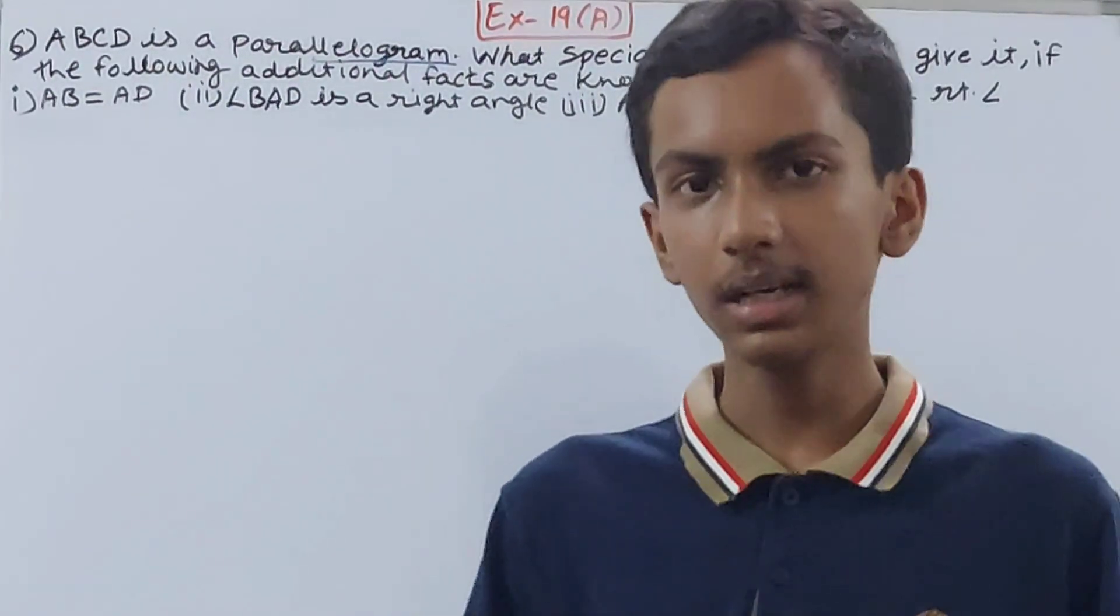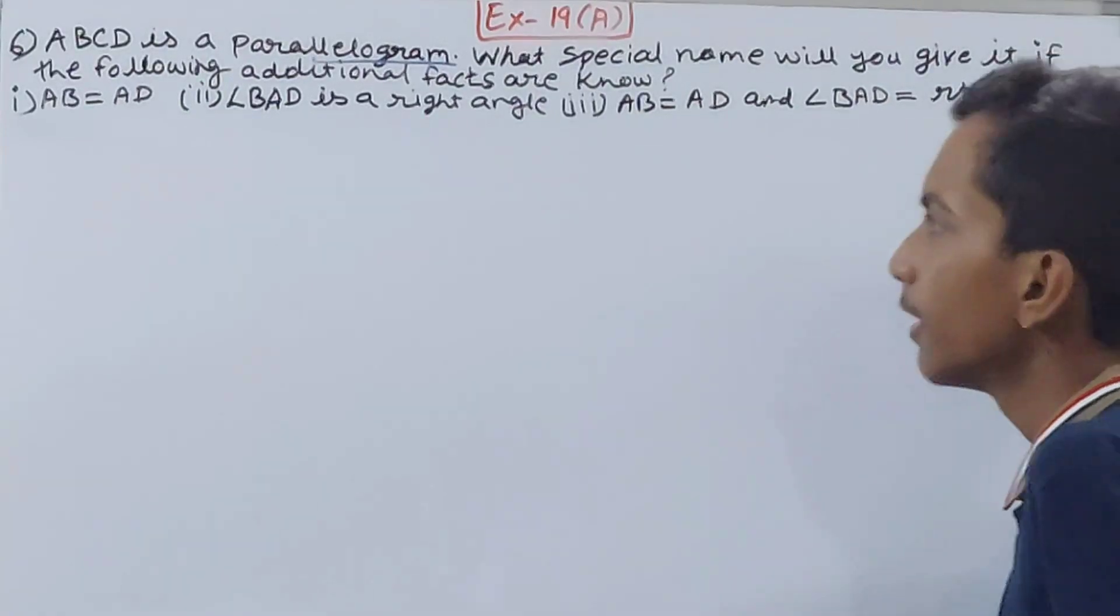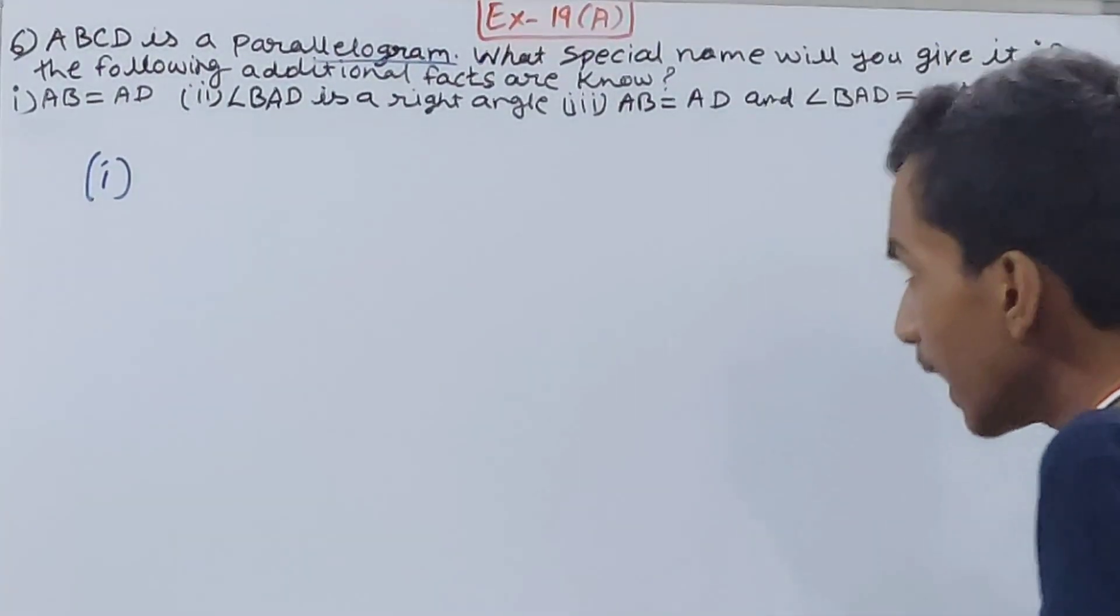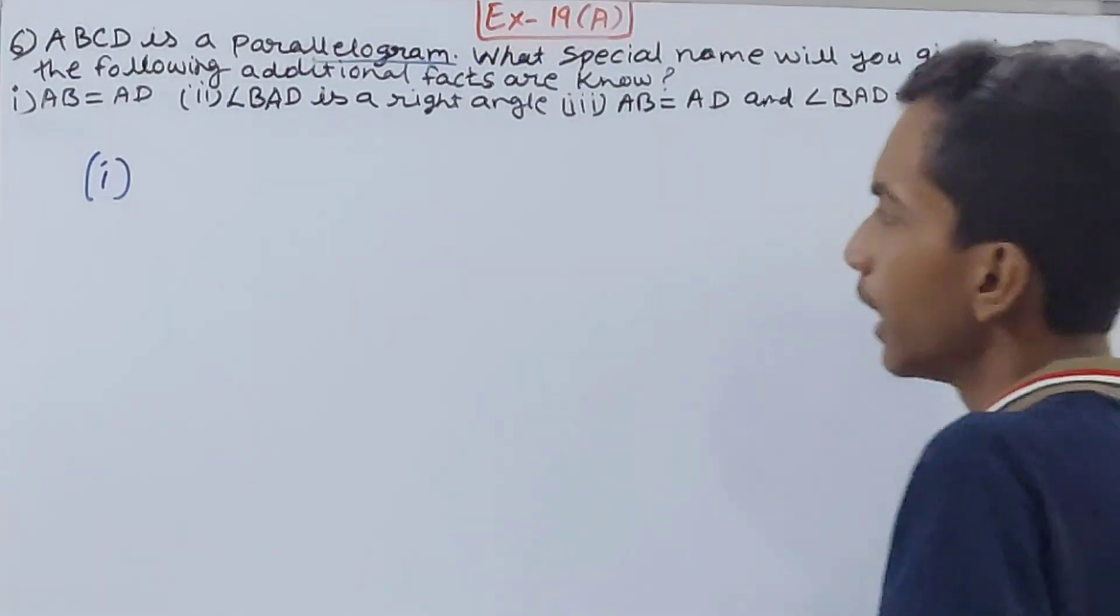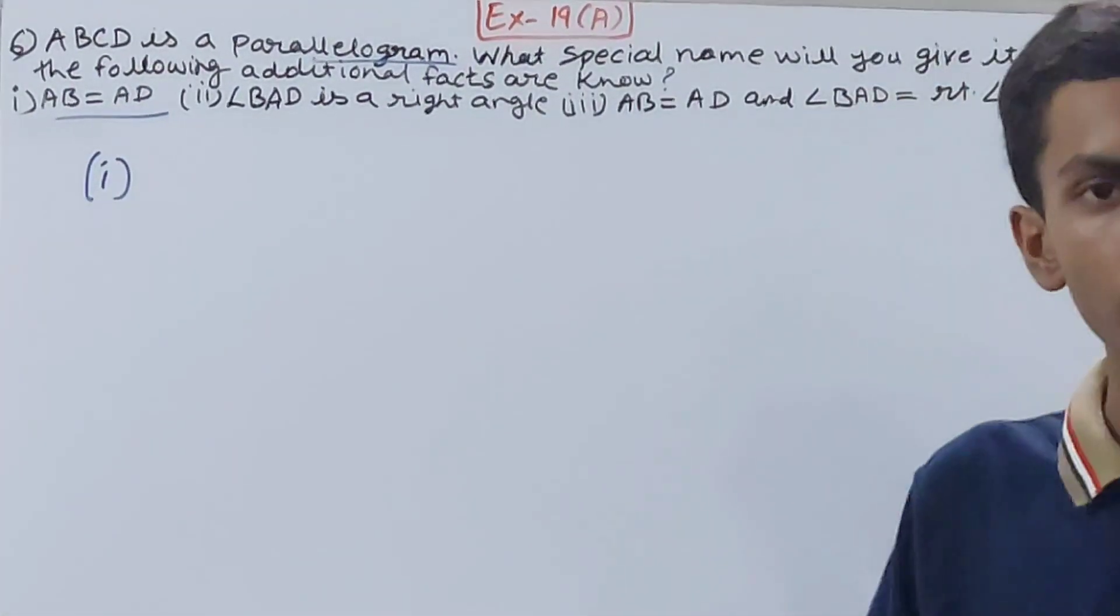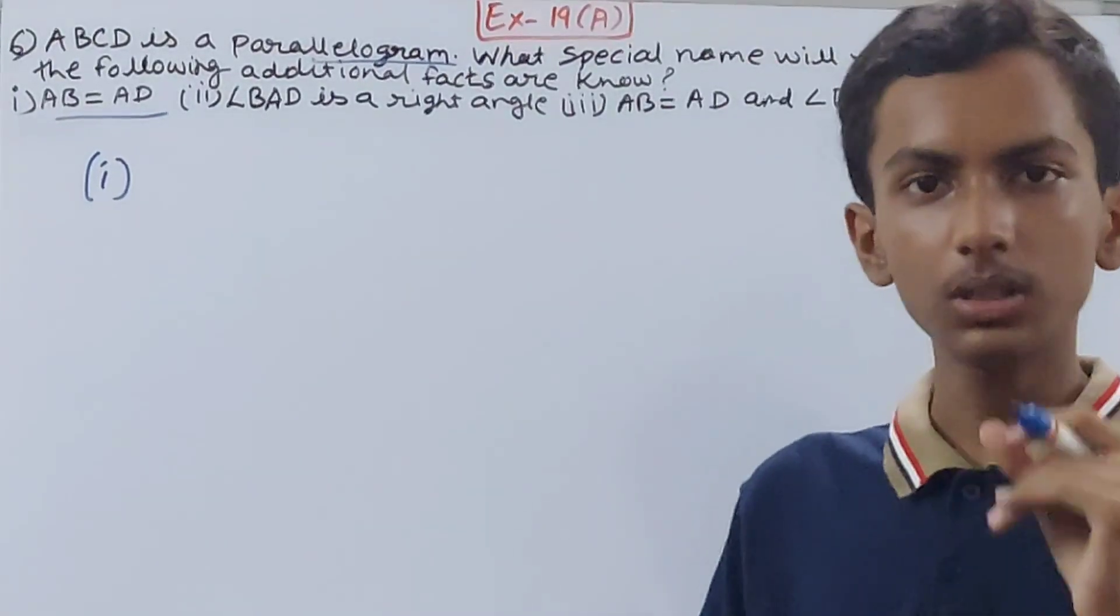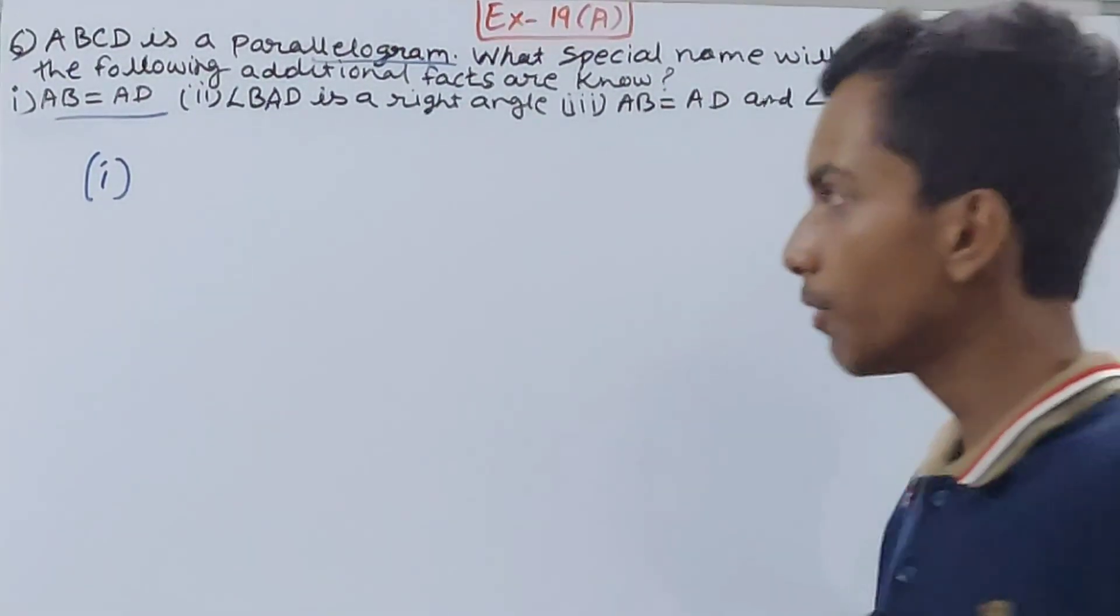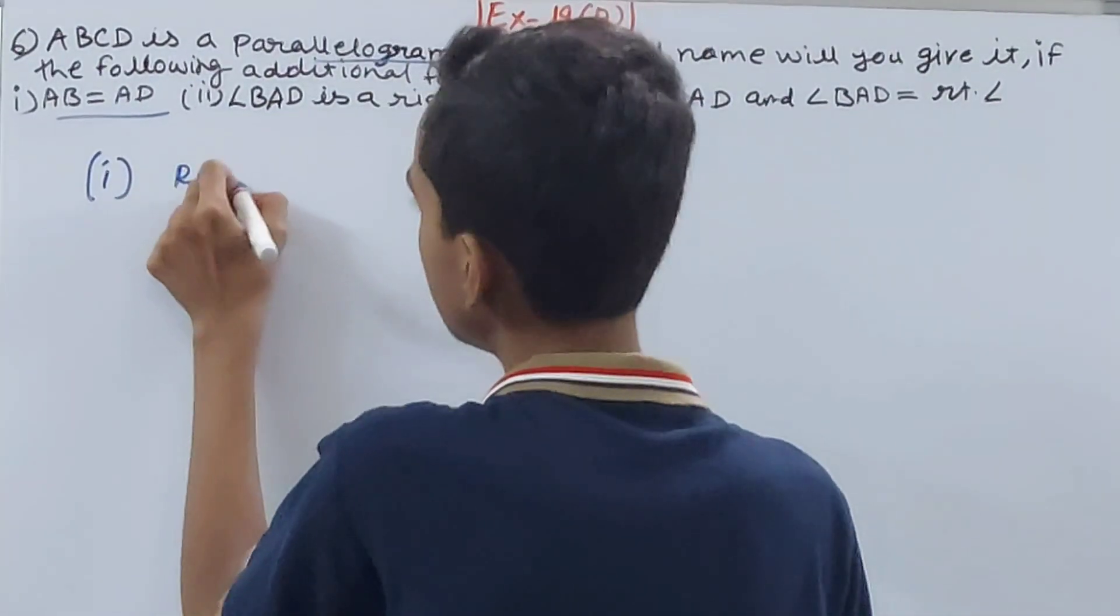Let's see the first part: AB is equal to AD. Quite simple, basically the sides are equal in what? Rhombus. In a rhombus, all the four sides are of equal measure. That's why we will call this figure a rhombus.